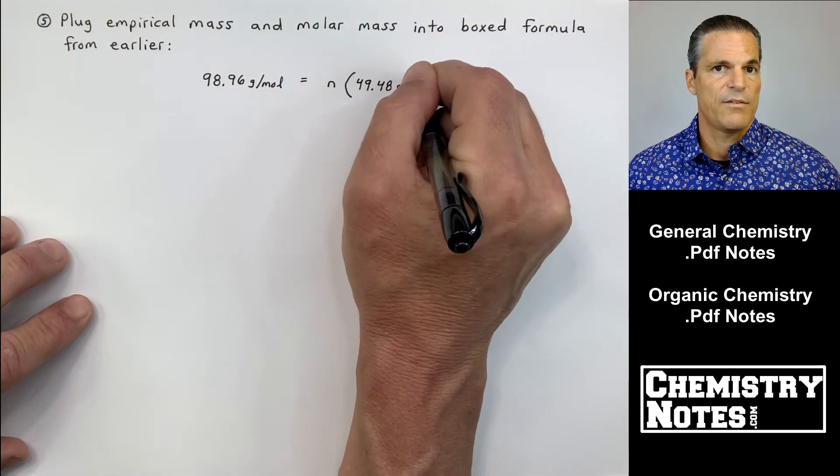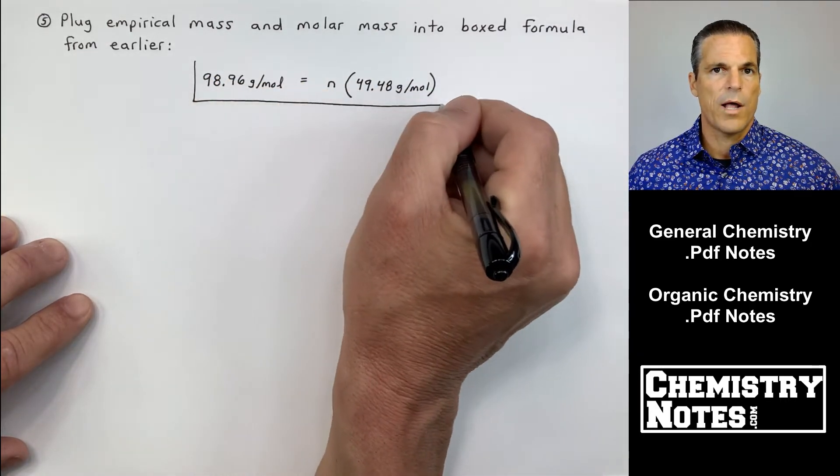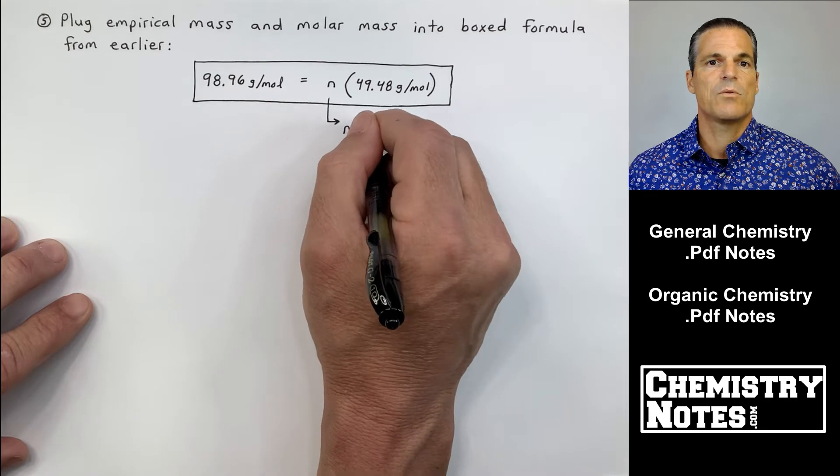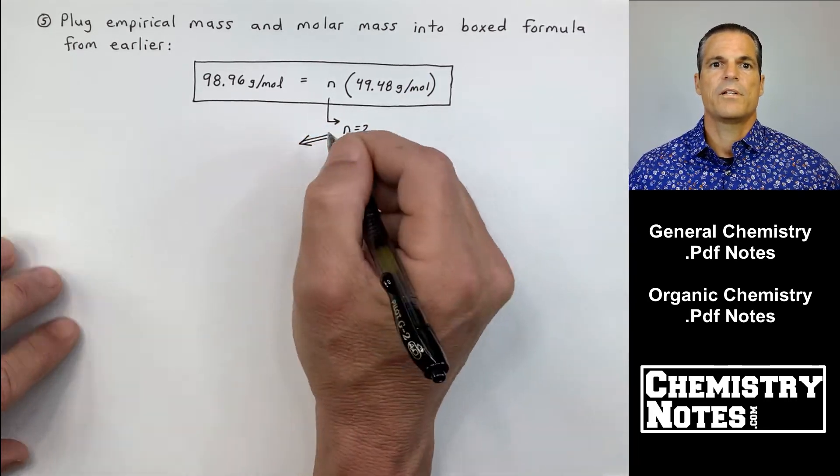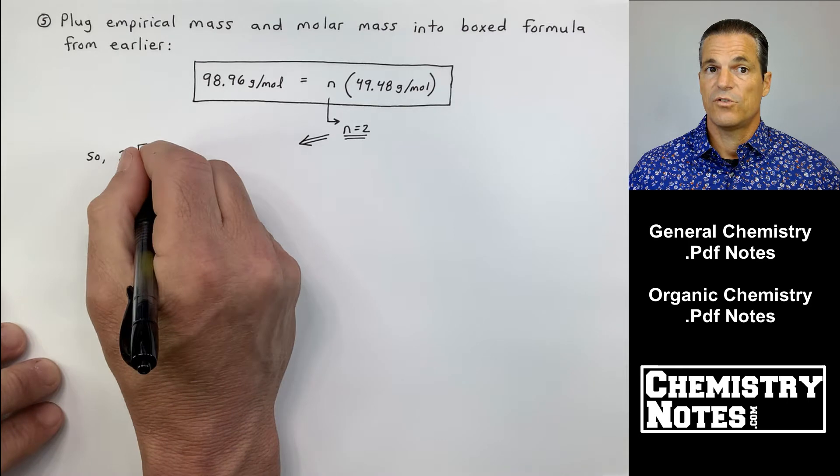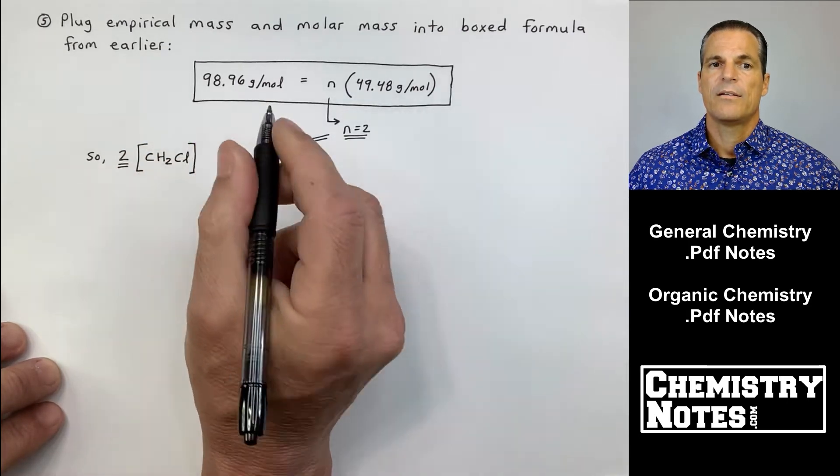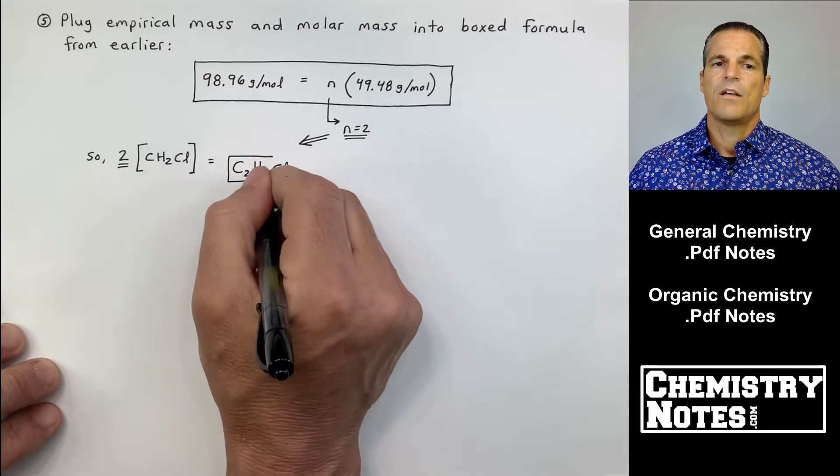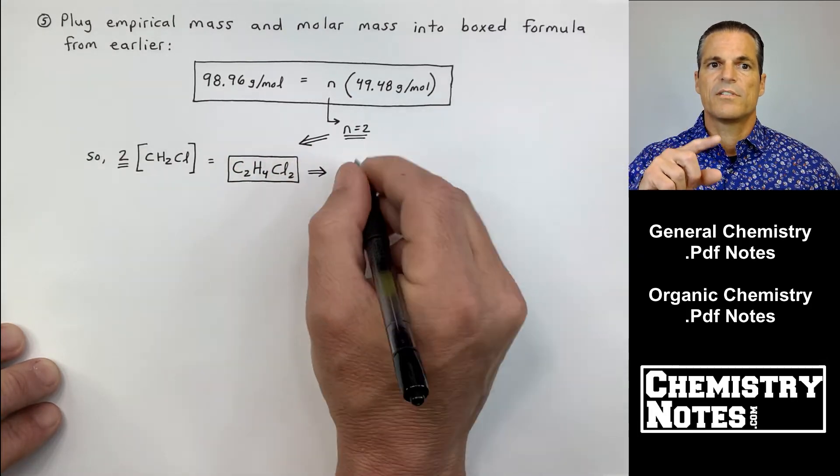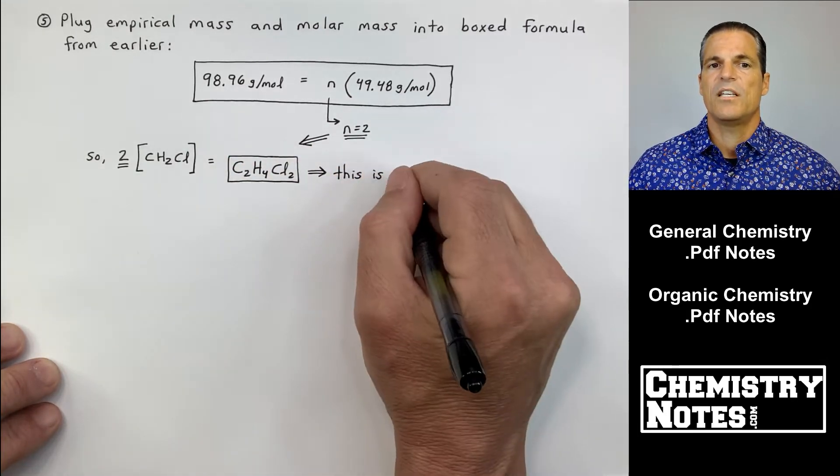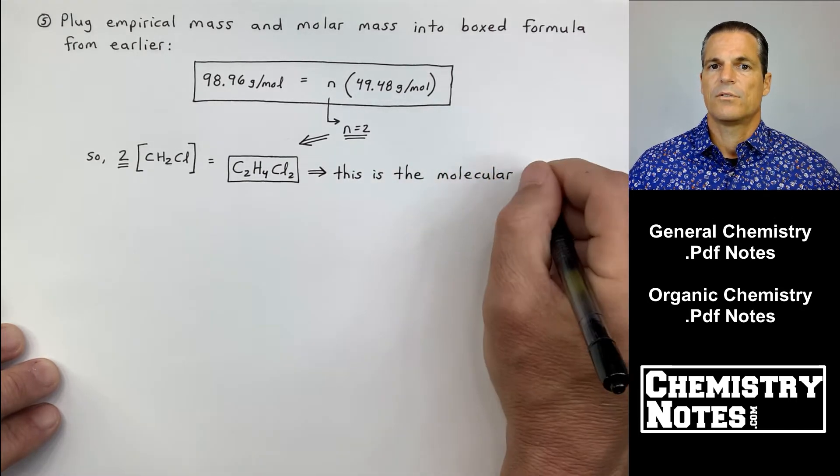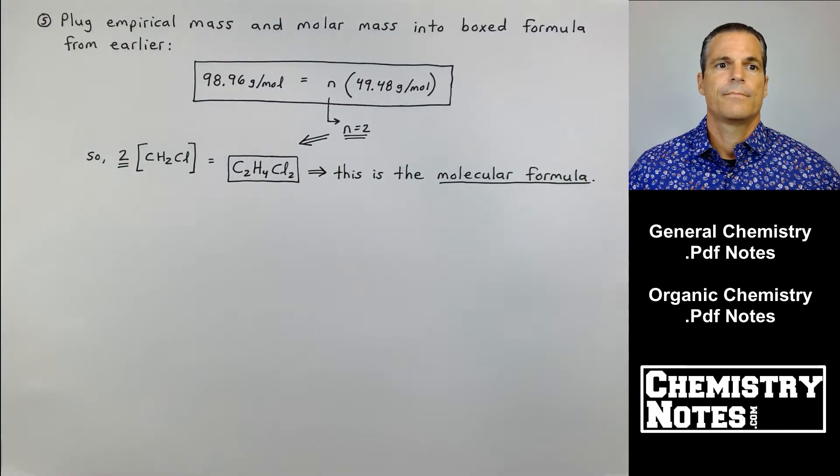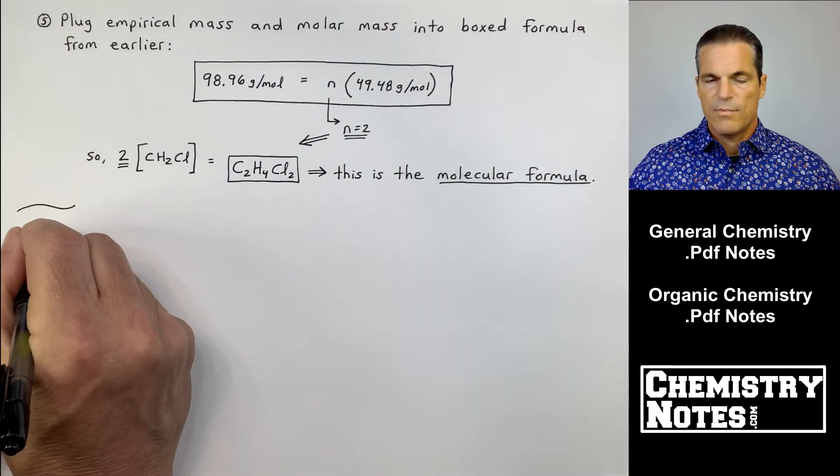H4Cl2. This is my molecular formula. Little squiggly line means we're going to move on to another example.